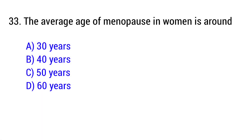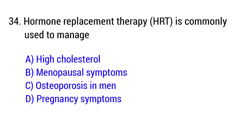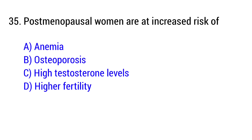Question number 32: A common symptom of menopause is — the right answer is Option B: Hot flashes. Question number 33: The average age of menopause in women is around — the right answer is Option C: 50 years. Question number 34: Hormone replacement therapy (HRT) is commonly used to manage menopause symptoms. Post-menopausal women are at increased risk of — the right answer is Option B: Osteoporosis.